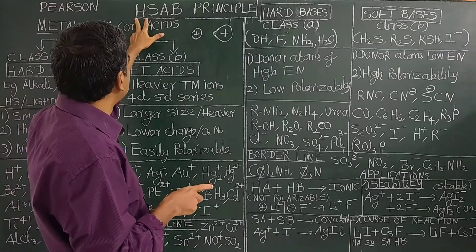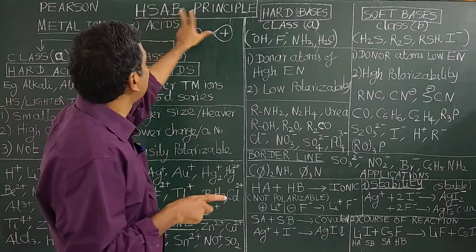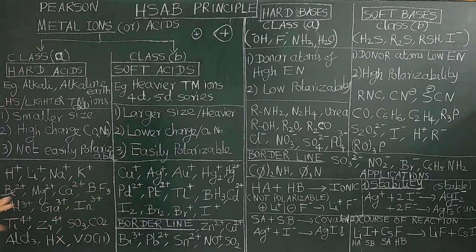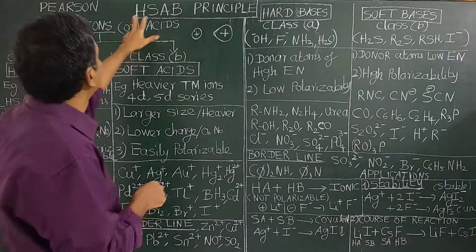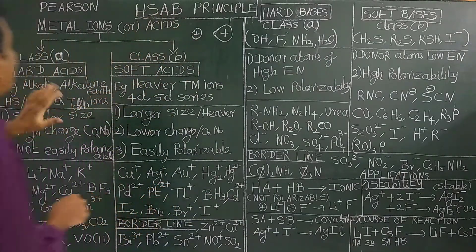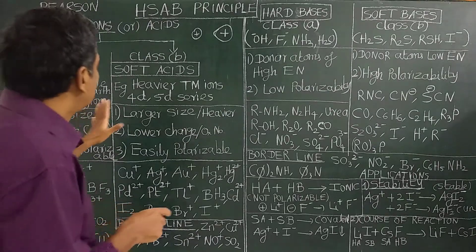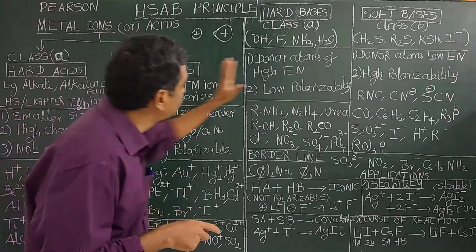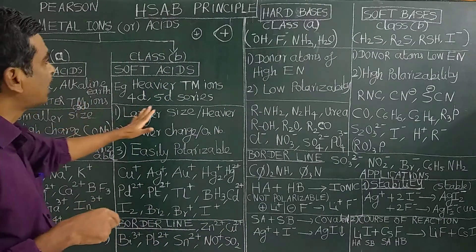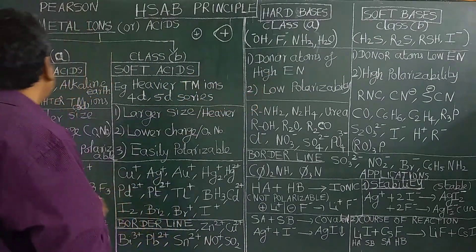HSAB stands for Hard Soft Acids and Bases. The classification includes hard acids, hard bases, soft acids, and soft bases.